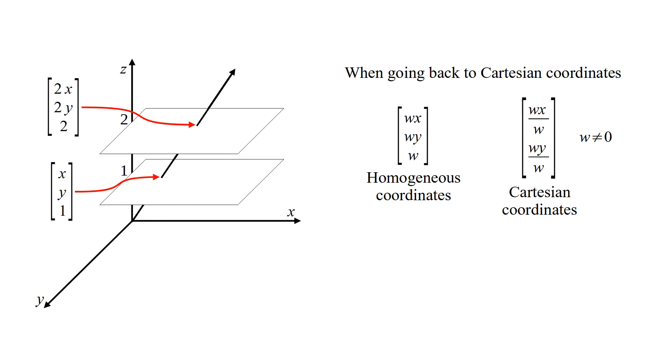When going back to Cartesian coordinates, x and y coordinates are divided by z coordinate. Scaled versions of the same point in homogeneous coordinates correspond to same Cartesian coordinates.